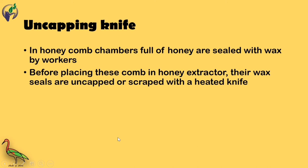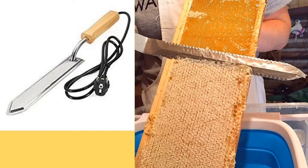The uncapping knife is used to uncap honeycomb cells. In the honeycomb, chambers full of honey are sealed with wax by workers. These wax-sealed cells are uncapped with a heating knife before honey extraction.